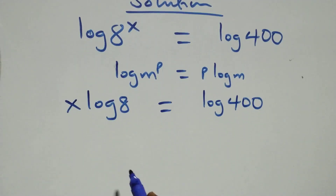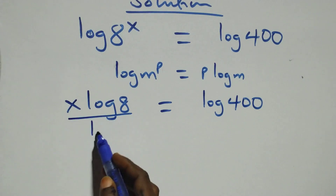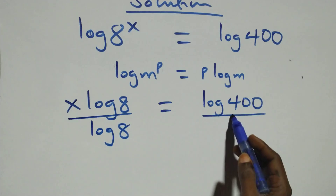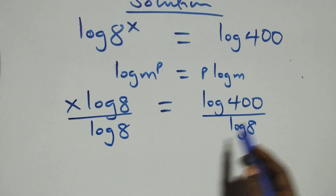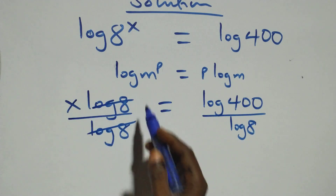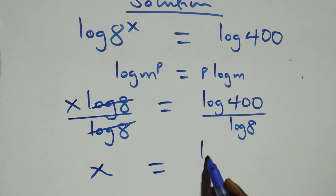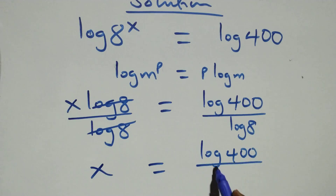Then, next step here, we divide both sides by log 8. We divide this side by log 8, and also divide this side by log 8. Log 8 cancels each other, and we have x equals to log 400 over log 8.